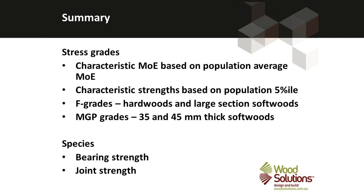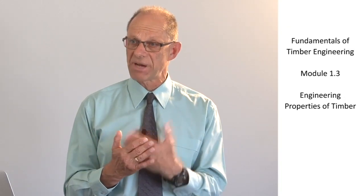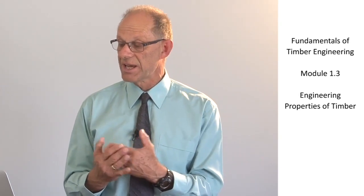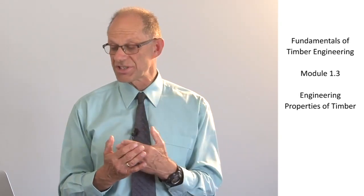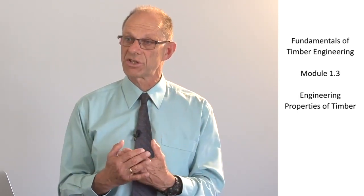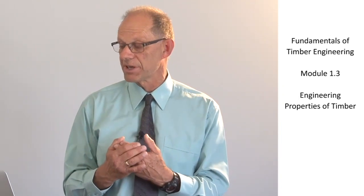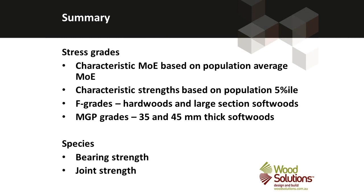In summary, stress grades are awarded in the production of structural timber elements and are used to relate structural timber to its characteristic strengths and characteristic modulus of elasticity. The characteristic modulus of elasticity is based on the average, while characteristic strengths are based on the fifth percentile — a conservative estimate from the whole population of a particular stress grade. Additionally, species are used to give bearing strength and joint strength, which are also needed in designing the details of each structural member.